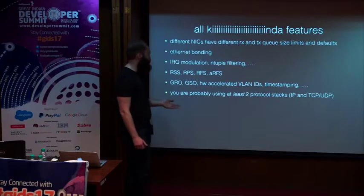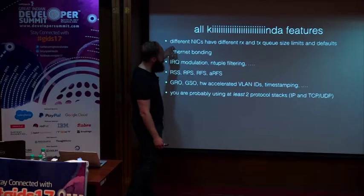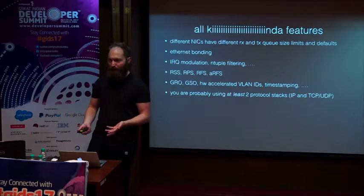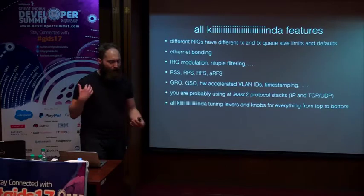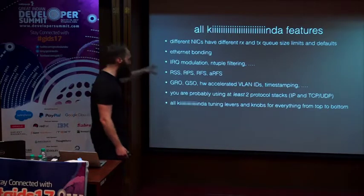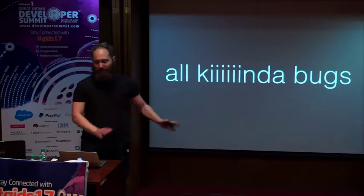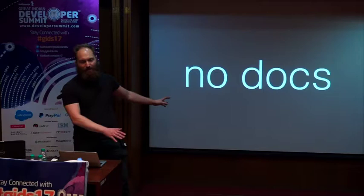There are also interesting software things people do to optimize network processing, like receive side steering, packet steering, flow steering, receive offloading, send offloading, hardware accelerated VLAN IDs, and time stamping. On top of all these crazy hardware and software features, most people using networking on a Linux computer are using at least the IP protocol stack, probably TCP, and maybe UDP too — all with all kinds of tuning knobs you can adjust. And there's all kinds of bugs. All that software is super, super buggy. And basically there's literally no documentation for any of it.